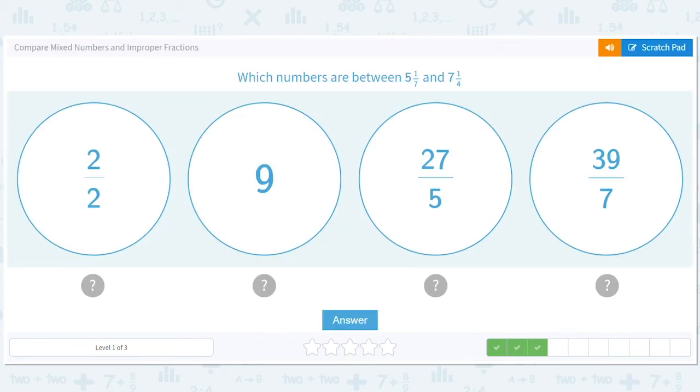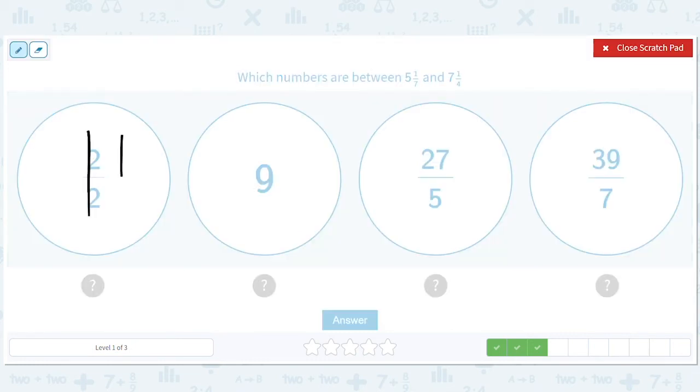What numbers are between five and a seventh and seven and a fourth? Okay. So this number is one. This number is nine. This number is five times five is 25. So it's five and two-fifths. And 39 out of seven is five and four-sevenths. Okay. Let's make sure our baseline math is right. Okay. So that's no good. One is way too small. Nine is big. Five and two-fifths. Okay.